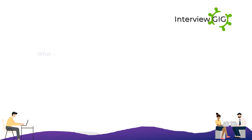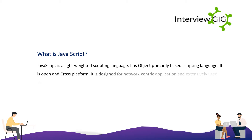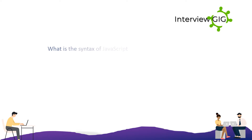What is JavaScript? JavaScript is a lightweight scripting language. It is an object-based scripting language. It is open and cross-platform. It is designed for network-centric applications and is extensively used for client-side validation.